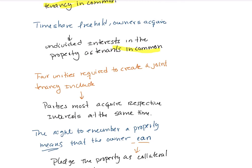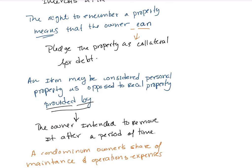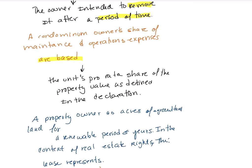Four unities required for joint tenancy include parties acquiring their interests at the same time. The right to encumber a property means that the owner can pledge the property as collateral for a loan. An item may be considered personal property — as opposed to a fixture — provided the owner intends to remove it after a period of time.